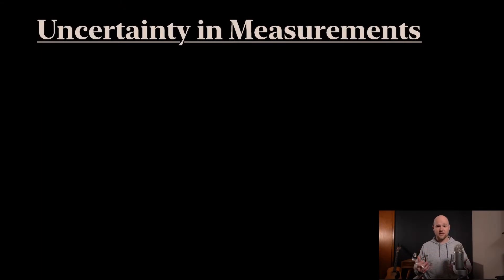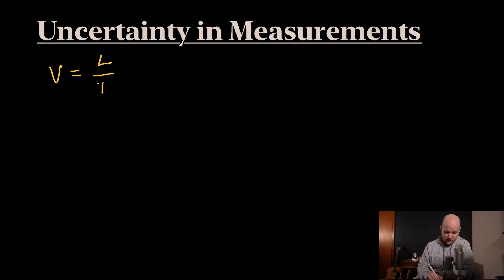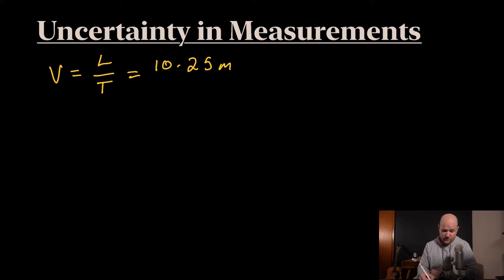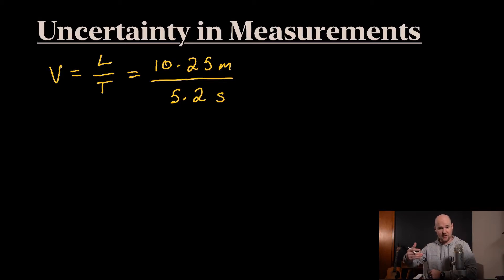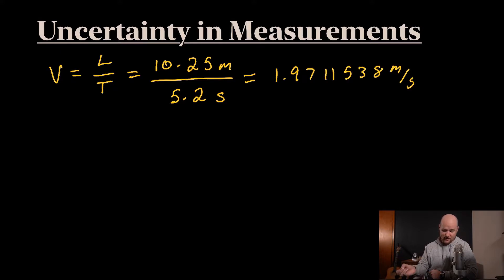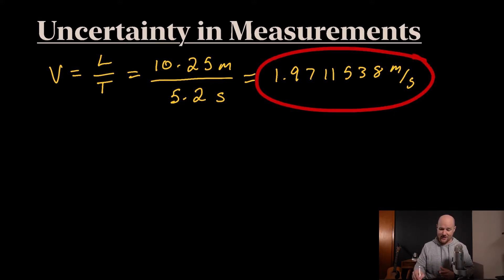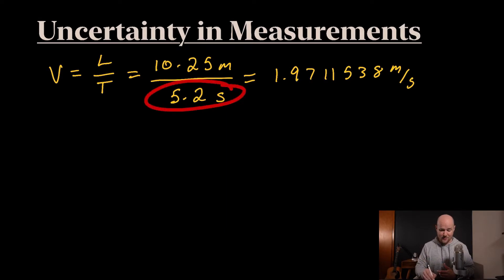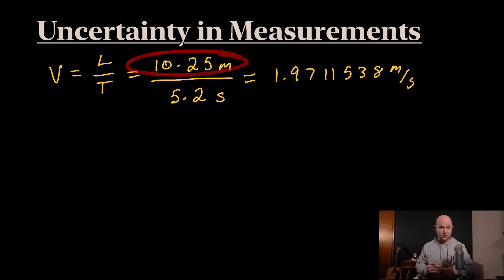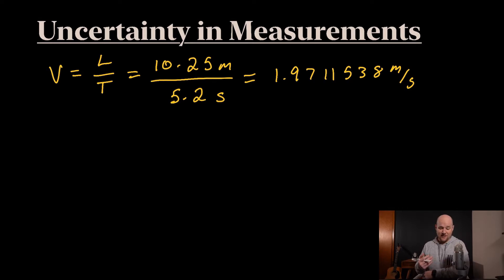So you understand that it's impossible to get a perfect measurement. Let's talk about a little experiment where you're trying to measure the velocity of something. A velocity is measured by a length divided by a time. Let's say we found that the length an object traveled was 10.25 meters, and it traveled that distance in a time of 5.2 seconds. If you plug 10.25 divided by 5.2, you get 1.9711538 meters per second. Here's the problem: we can't say our answer is actually that accurate, because we measured time only to one decimal place and length to two decimal places. How can we have seven decimal places in our answer and say that is accurate, especially if neither of our measurements were that accurate?